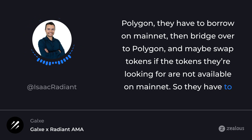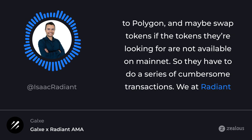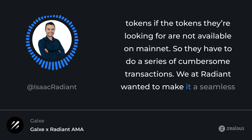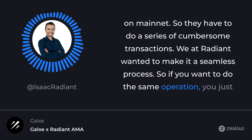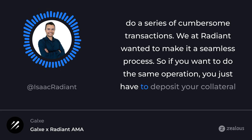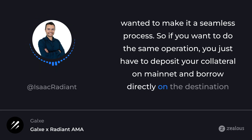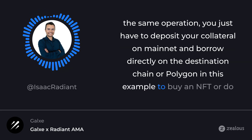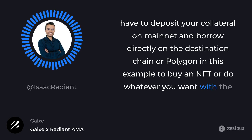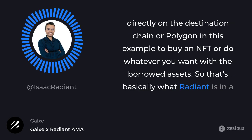They have to do a series of cumbersome transactions. We at Radiant wanted to make it a seamless process, so if you want to do the same operation, you just have to deposit your collateral on Mainnet and borrow directly on the destination chain — on Polygon in this example — to buy an NFT or do whatever you want with the borrowed asset.